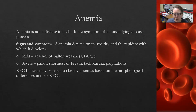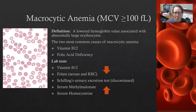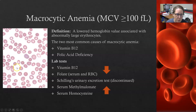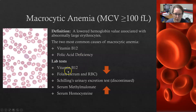The red cell indices can be used to classify anemias based on the morphological differences in their red cells and what they look like on slides. The first type is macrocytic anemia, where the MCV is greater than 100 femtoliters. This is a lowered hemoglobin value associated with abnormally large erythrocytes. The slide shows some normal-sized red cells alongside some large macrocytic ones. The two most common causes are vitamin B12 deficiency and folic acid deficiency. Lab tests include serum B12 and folate — both run on serum and on red cells — which would be decreased.